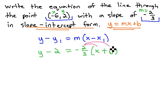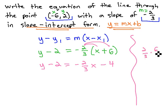First, we distribute through the parentheses. This gives us y minus 2 equals negative 2/3 x minus 4. We get that by multiplying 2/3 times 6, putting the 6 over 1, and 6 over 3 reduces to 2. 2 times 2 is 4.